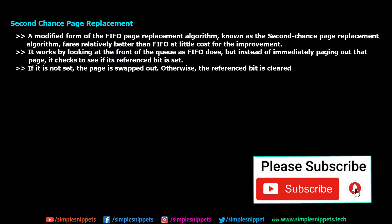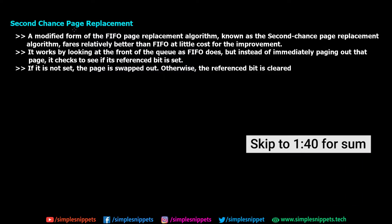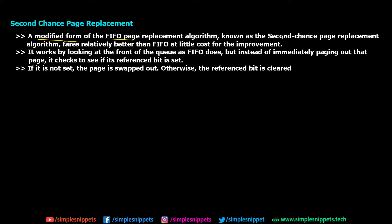The second chance page replacement algorithm, as the name suggests, basically gives a second chance to a particular page which is supposed to be replaced depending on a particular criteria. It is a modified form of the first-in first-out (FIFO) page replacement algorithm and it fares relatively better than FIFO at a little cost for the improvement. It works by looking at the front of the queue as FIFO does, but instead of immediately paging out that page, it checks to see if the reference bit is set to 1 or not.